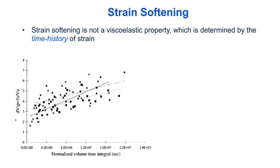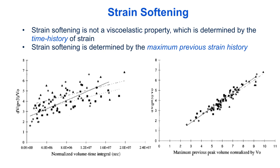Here, the y-axis represents the amount of softening that occurred in the guinea pig experiment, plotted against the time history of loading, and you can see there's only a weak correlation. But when the softening is plotted against the maximum previous strain or volume experienced by the preparation, you can see there's a much stronger correlation, suggesting that strain softening is determined by the history of maximum previous strain, not the time history of the strain.